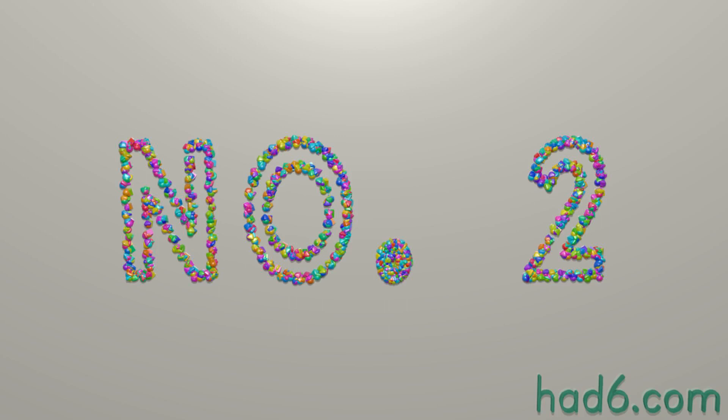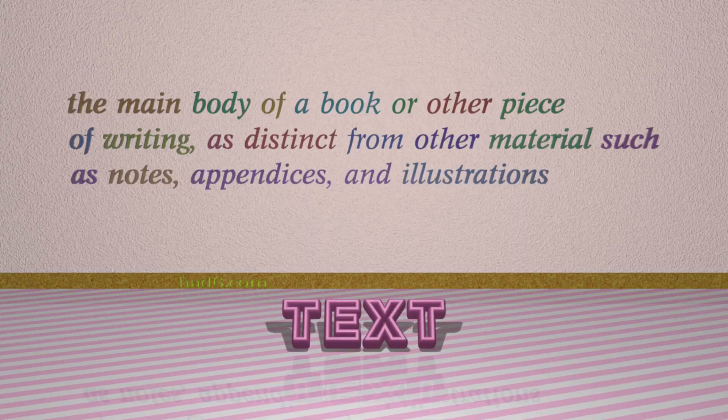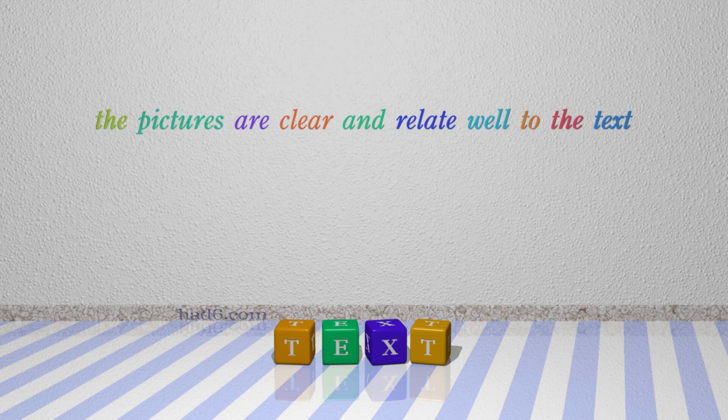Number 2: Text. Which means the main body of a book or other piece of writing, as distinct from other materials such as notes, appendices, and illustrations. For example: The pictures are clear and relate well to the text.